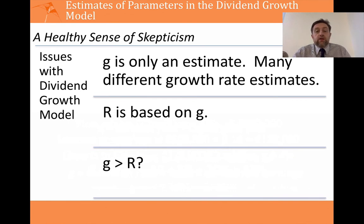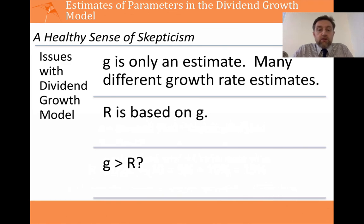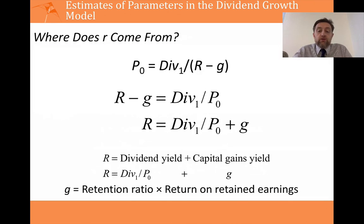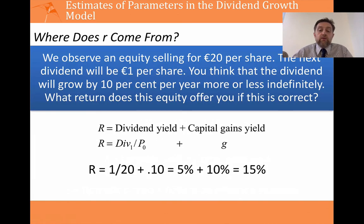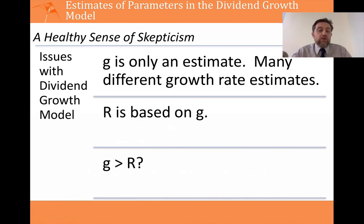A further problem arises when the growth rate is bigger than the discount rate. In that situation, you're saying that growth in earnings exceeds investors' required returns forever, which doesn't make sense. When G is greater than R, the model effectively breaks down. And when the model breaks down, any analysis derived from it — including the discount rate estimates — will also be wrong. So there are a lot of issues with this model. It's not the best model in the world, but it's one that gives you an insight into the dynamics of prices.